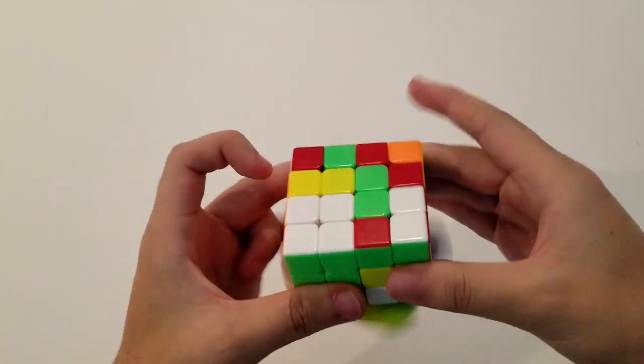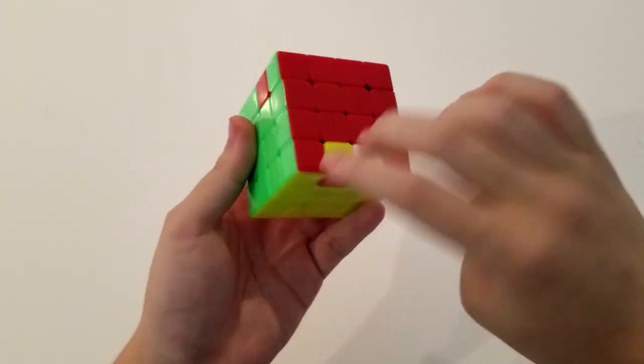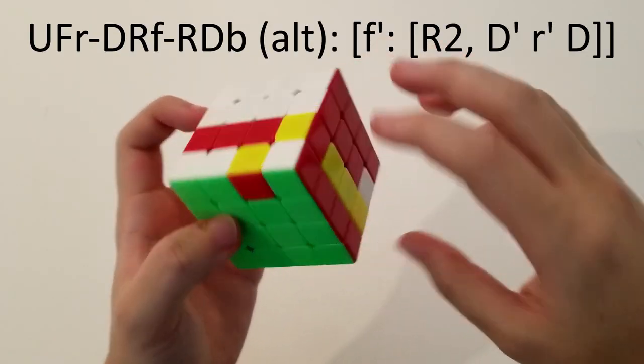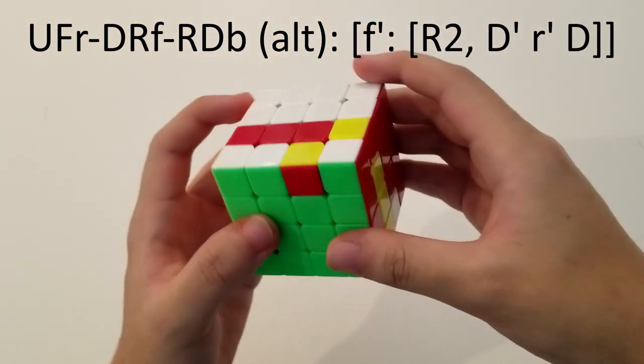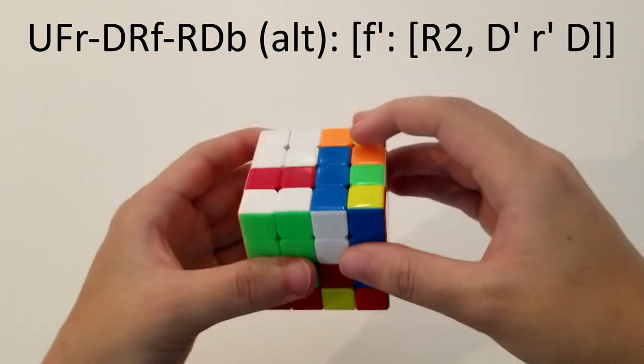There is an alternative alg, however, if you happen to prefer it, where you can split this D-edge up here by doing an F-wide prime. So now, these are interchangeable on R2, like this. And this can insert with D prime, R prime, D.